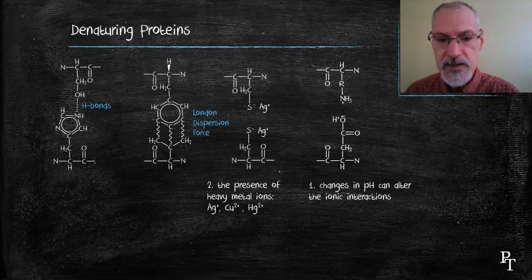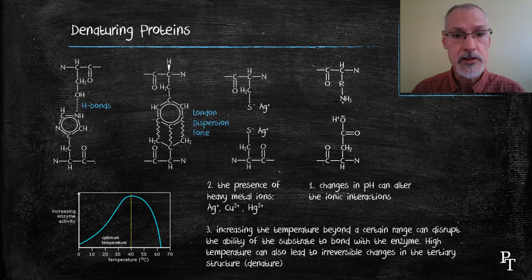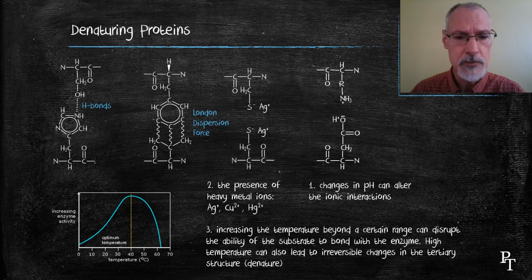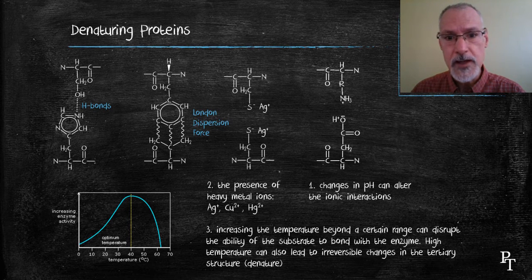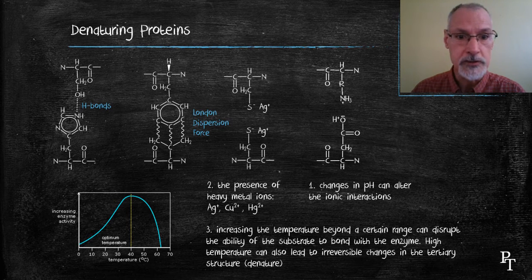Finally, temperature can also interfere with these bonds. Increasing temperature can increase the kinetic energy of our substrate, making it more difficult to bind with our enzyme. Secondly, those interactions that are present inside of the enzyme itself could be unfolded by increased kinetic energy and vibration.